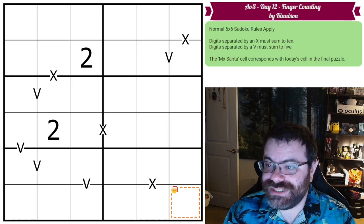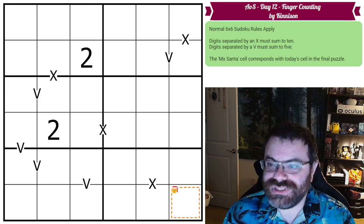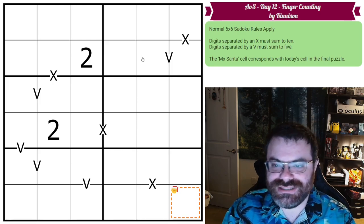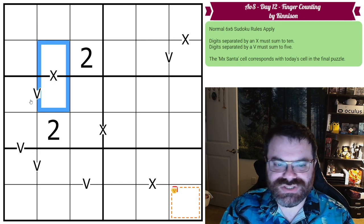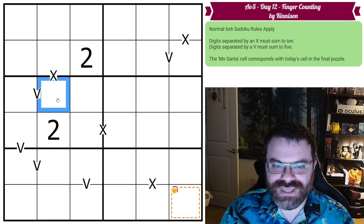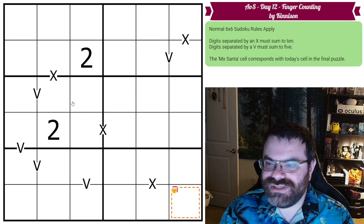This one is called finger counting. So we have normal six by six rules. In addition to that, digits separated by an X sum to 10, so these two sum to 10, and digits separated by a V sum to five. These two sum to five. And that's it. Those are all of the rules.